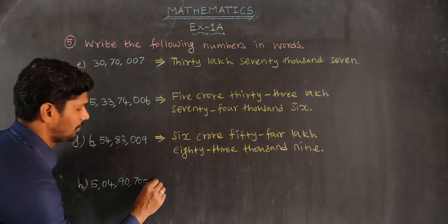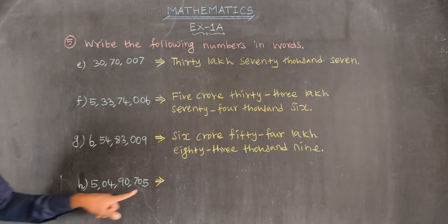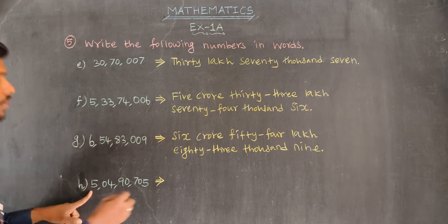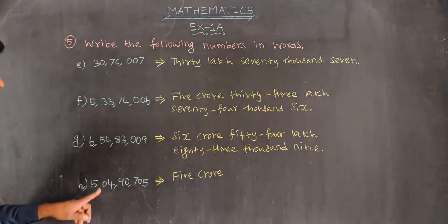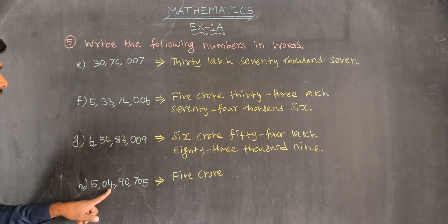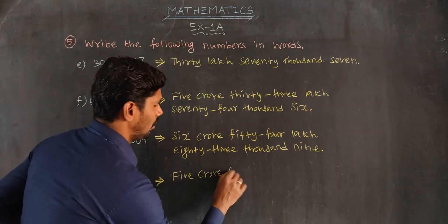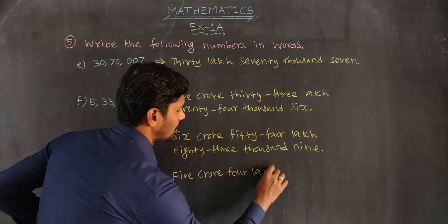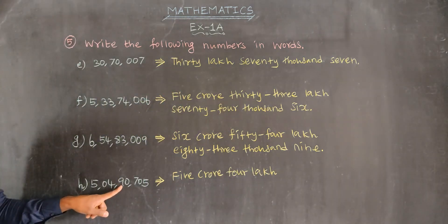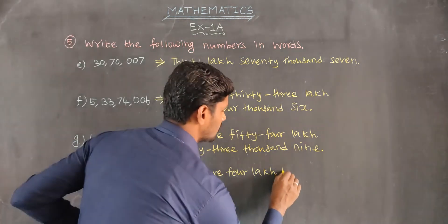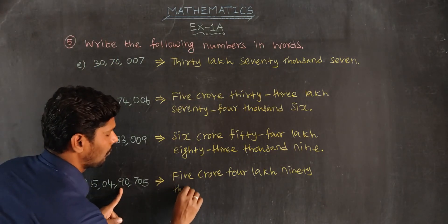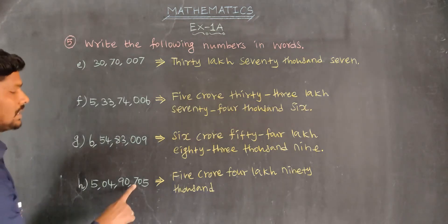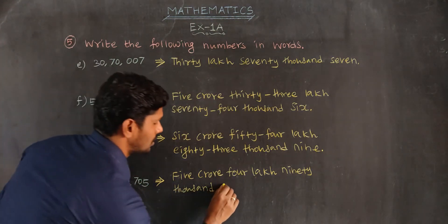Last number. Ones, tens, hundred, thousand, ten thousand, lakh, ten lakh, crore. Five crore, lakh value zero. Five crore four lakh ninety thousand, ninety thousand, seven hundred twenty-five.